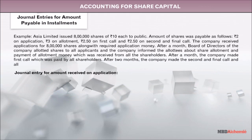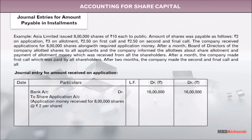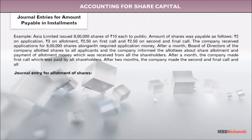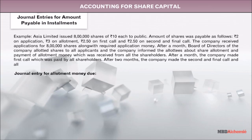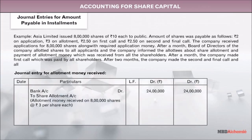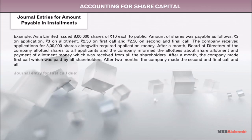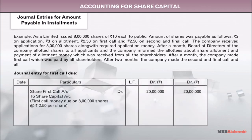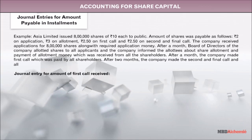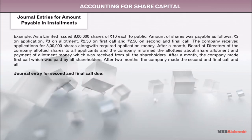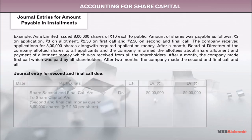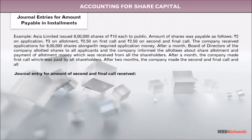Let's understand with the help of an example. Journal Entry for Amount Received on Application, Journal Entry for Allotment of Shares, Journal Entry for Allotment Money Due, Journal Entry for Allotment Money Received, Journal Entry for First Call Due, Journal Entry for Amount of First Call Received, and Journal Entry for Amount of Second and Final Call.